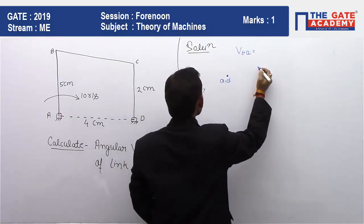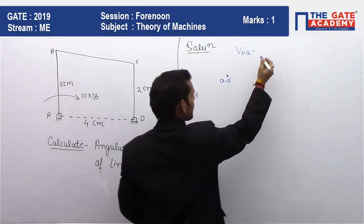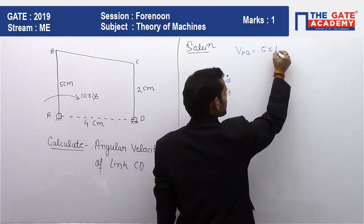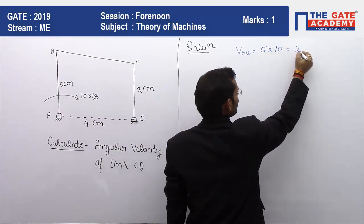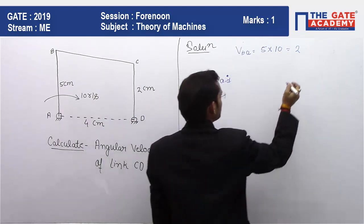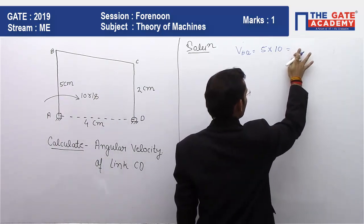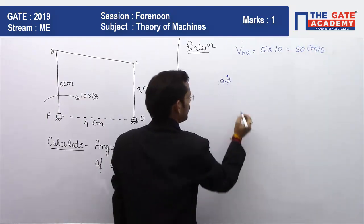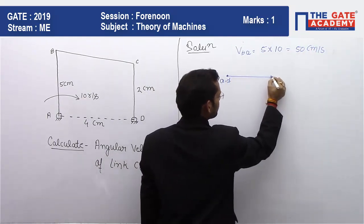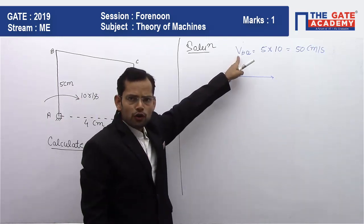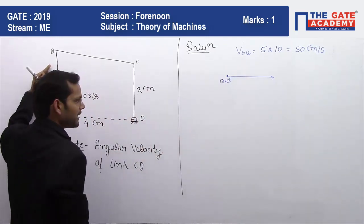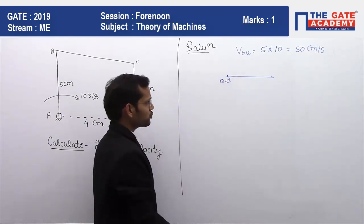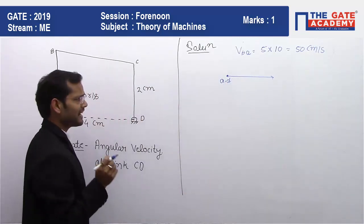The velocity will be equal to the radius, that is 5 centimeters, multiplied by the angular velocity, that is 10 radians per second. So we will easily get the velocity: 5 multiplied by 10, that is 50 centimeters per second. We will draw a line, and the direction of the velocity vector will be perpendicular to the link. If this link is vertical, then the velocity vector will be horizontal.